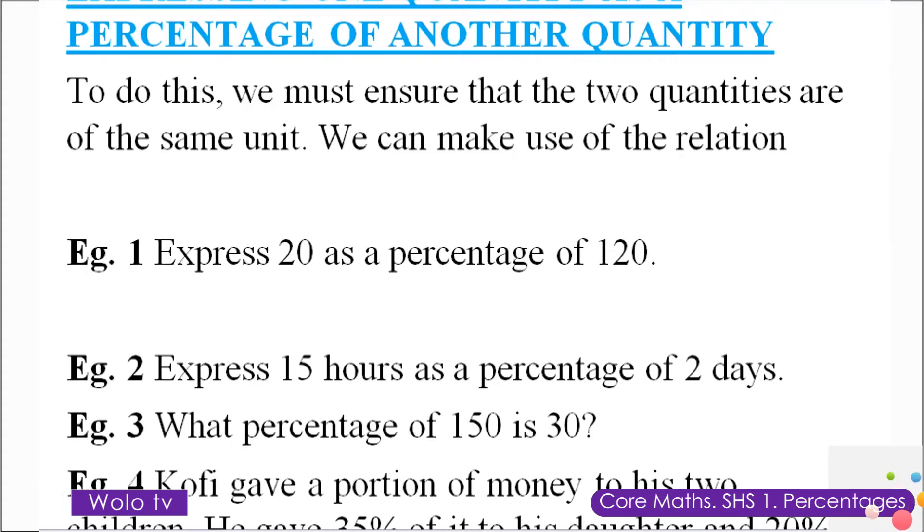Now let's see. I've already mentioned to you that the two quantities have to be of the same unit. Therefore, if the two quantities have no unit, it means we are free. But if the quantities are of different units, we have to ensure that we express both to have the same quantity.